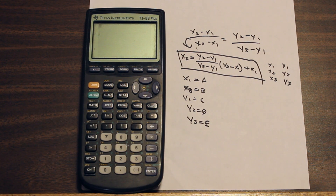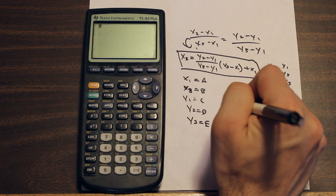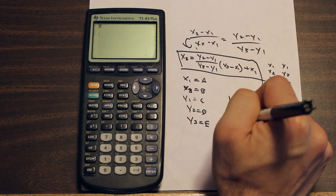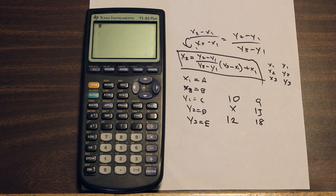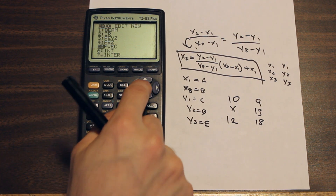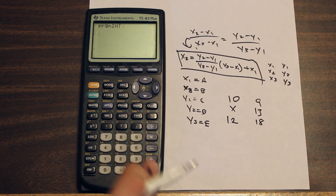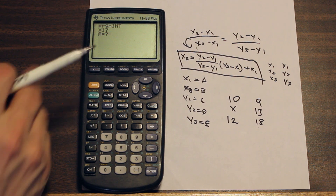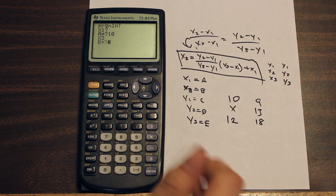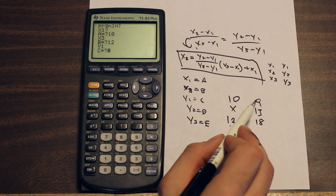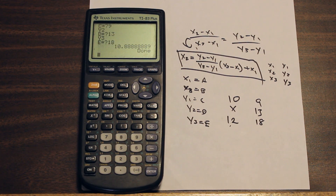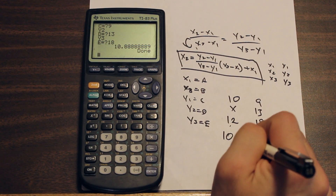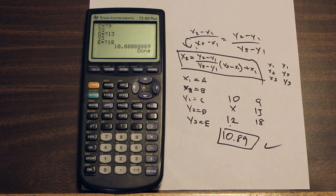Press 2nd > Quit to exit the editor. Now let's run the program. We have sample data: x1 = 10, x3 = 12, and y values y1 = 9, y2 = 13, y3 = 18, and we want to find x2. Go to the PROGRAM menu, select INT, press Enter. The program prompts: x1 = 10, x3 = 12, y1 = 9, y2 = 13, y3 = 18. The result is 10.89, which is the correct answer.